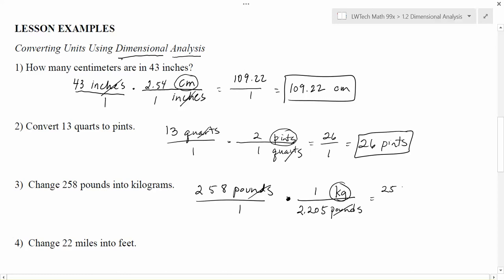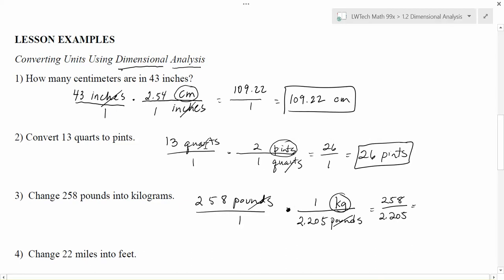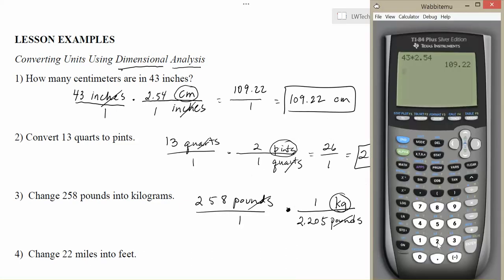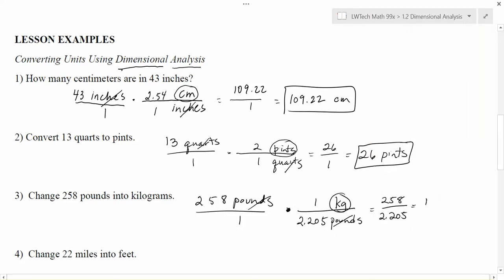Multiply across the top: 258 times 1 is 258. 1 times 2.205 is 2.205. And then I just need to divide those numbers to come up with my solution. 258 divided by 2.205 gives me 117.01, and my solution will be in kilograms. Again, for rounding purposes, usually one or two digits after the decimal is fine unless a particular problem gives you a more specific requirement.